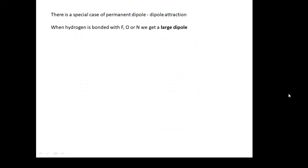There is a special case of this. A special case of permanent dipole-dipole. And it's called a hydrogen bond. If you've got hydrogen bonded with fluorine, oxygen or nitrogen, we get a large dipole.